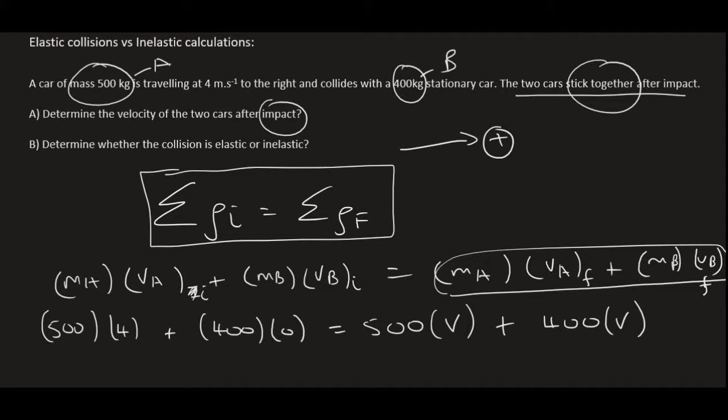If two objects stick together, they will have the same velocity. On the left, we're going to end up with 2000 equals, and then 500 plus 400 is 900V. The reason I can put them together is that their V's are the same.